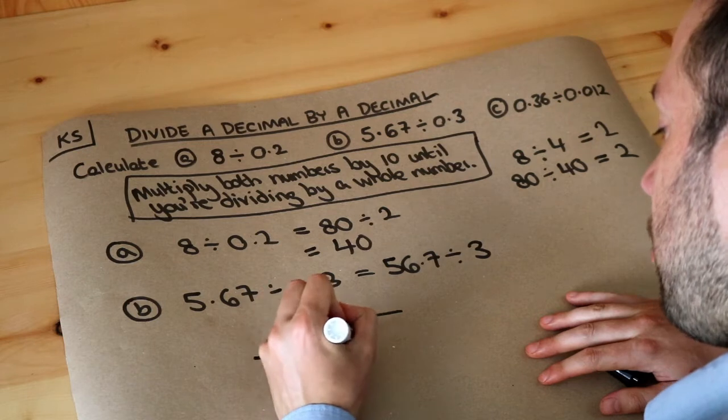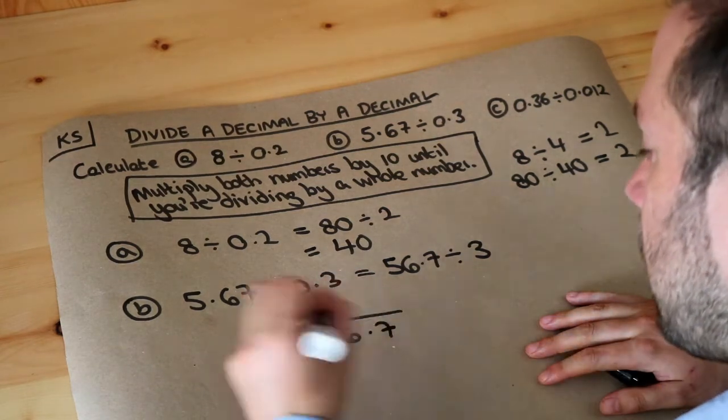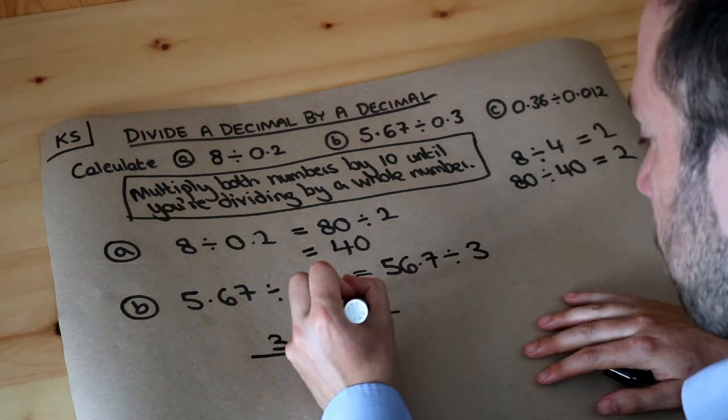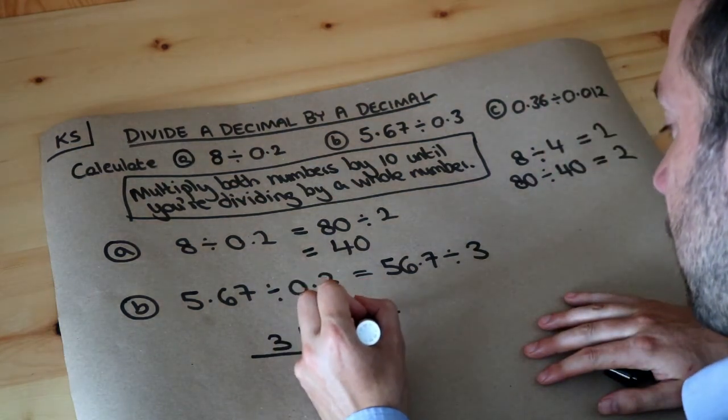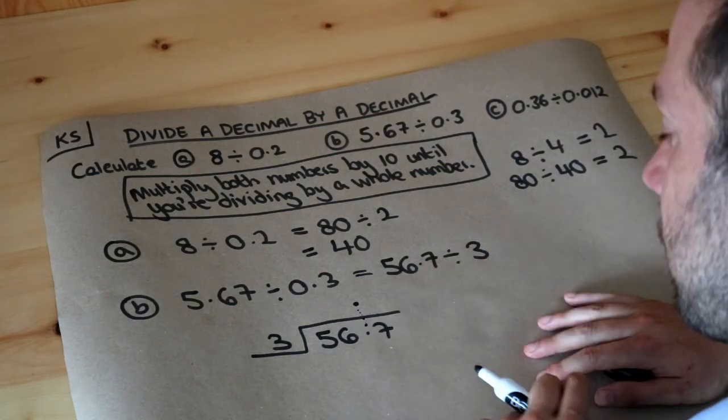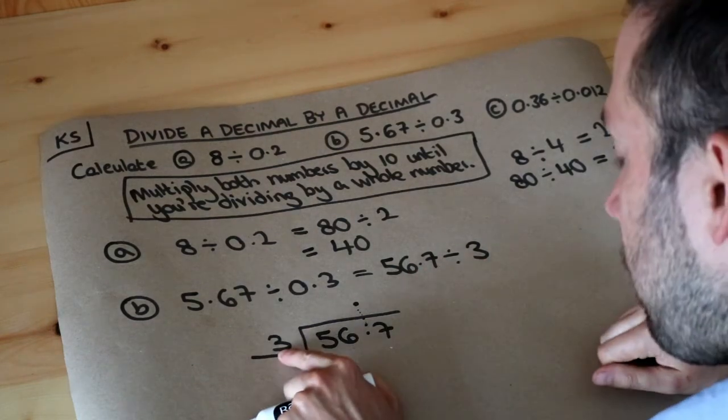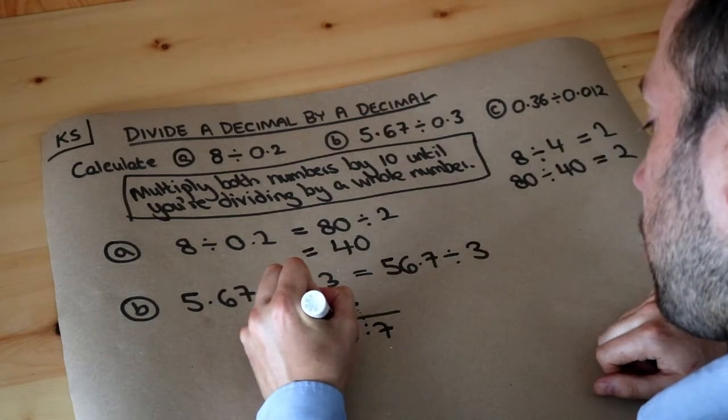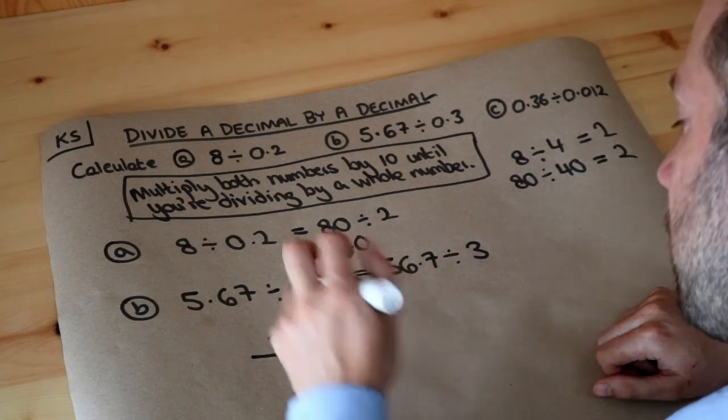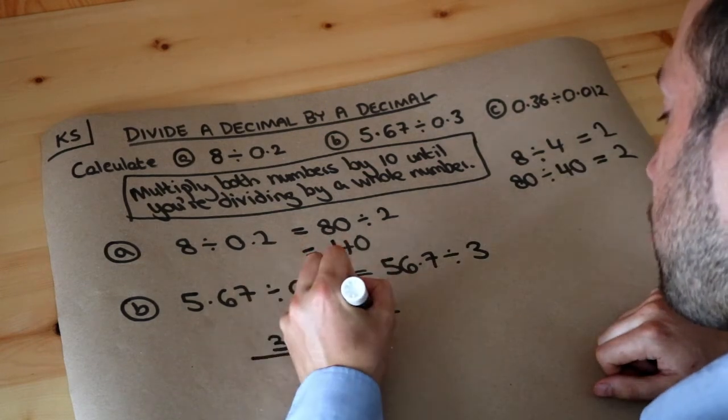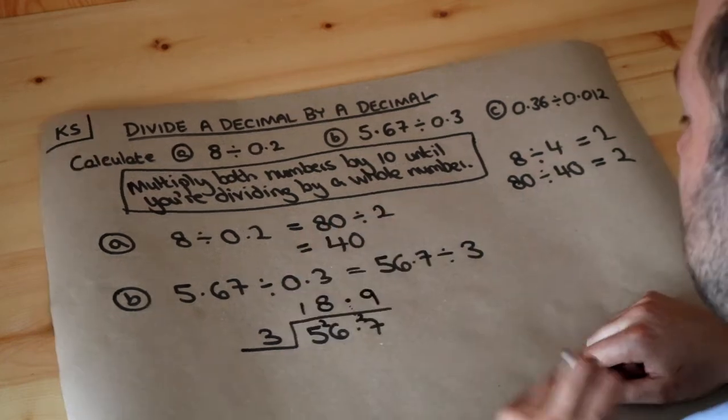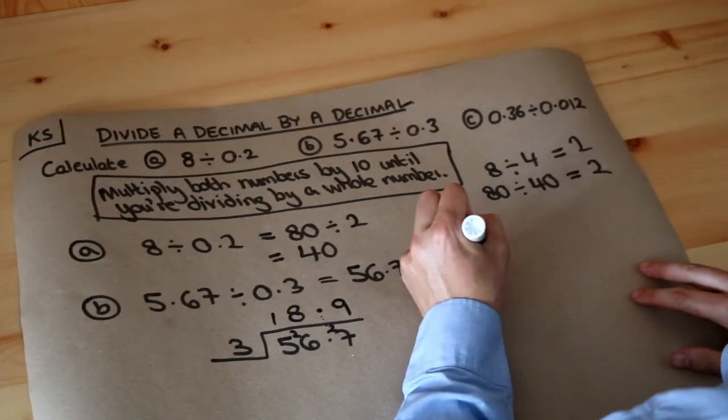We're going to do 56.7 using the bus stop method, or whatever you want to call it, divide by 3. And remember that you just need to put the decimal point here in the same place as you've got the decimal point in the number you're dividing into. So 3's into 5 goes in once, remainder 2. 3's into 26, that goes in 8 whole times, remainder 2. And then 3's into 27 goes in 9 whole times. So the answer is 18.9.